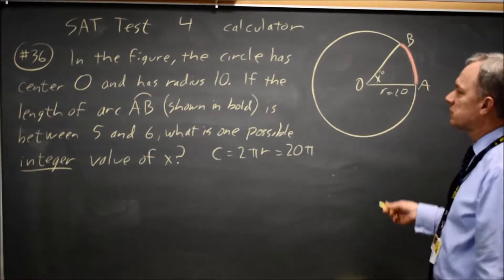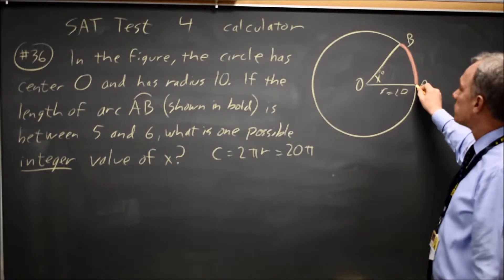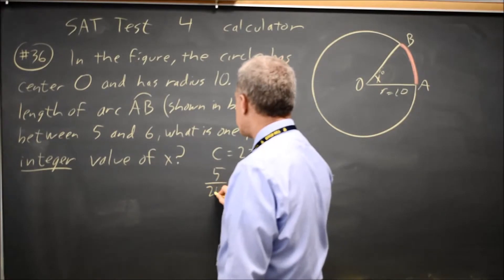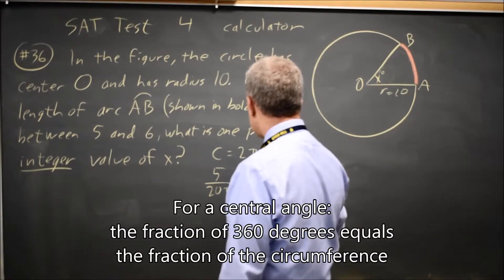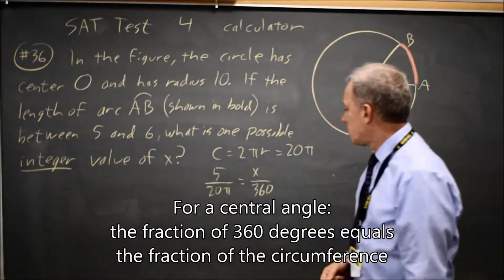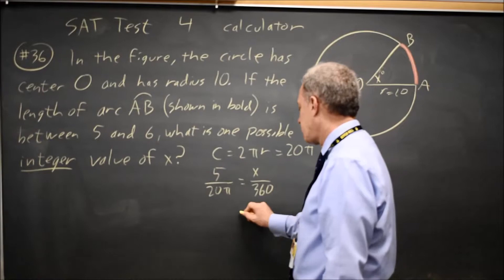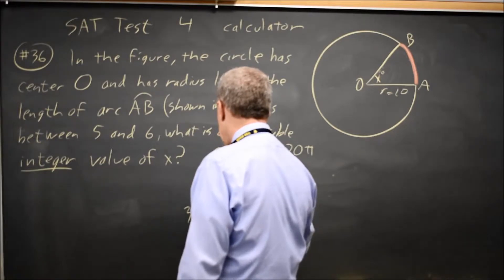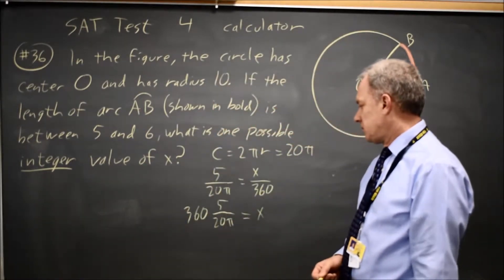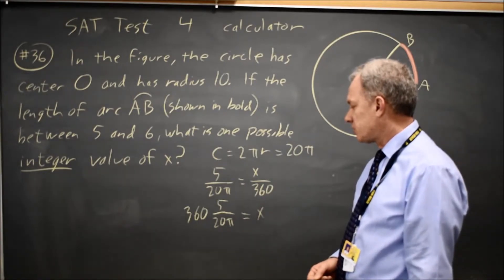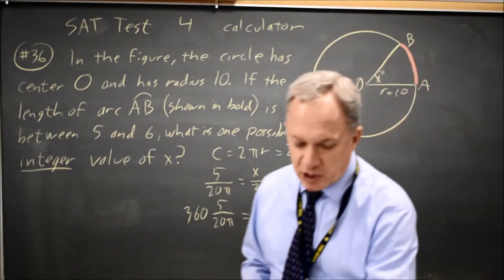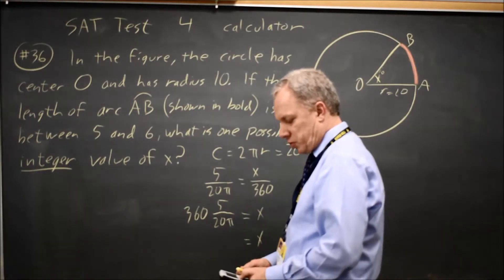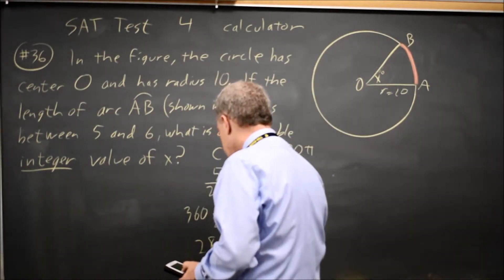So the fraction of the circumference — if the arc in pink has length 5, then 5 over 20π equals my angle x over 360 degrees. If I multiply both sides by 360, I get x equals 360 times 5 over 20π. I could simplify that to 18 times 5 divided by π, but on my calculator I find that x equals 28.6 degrees.